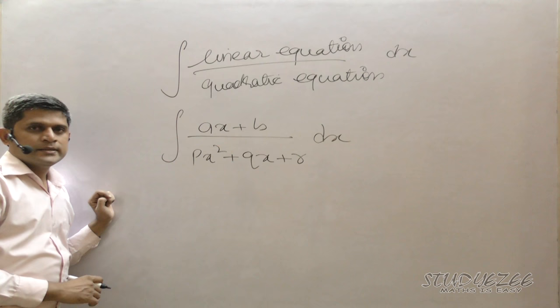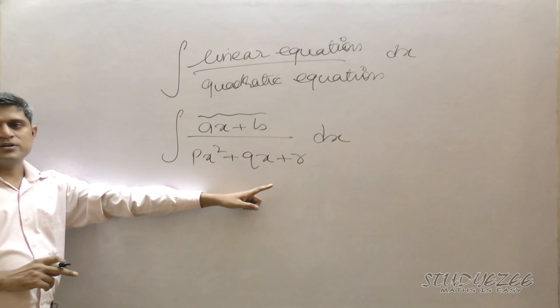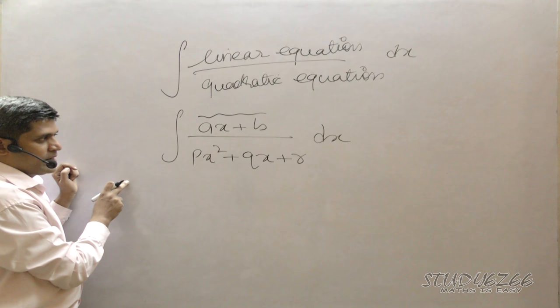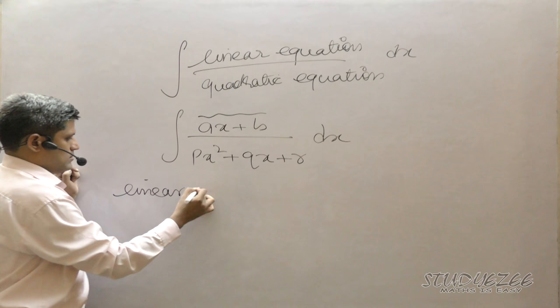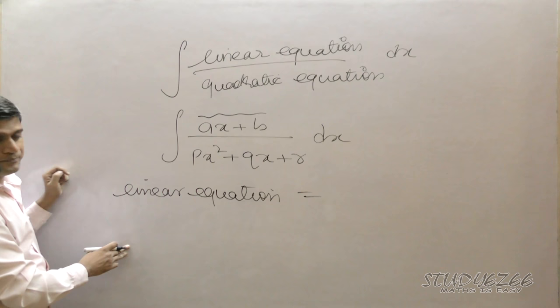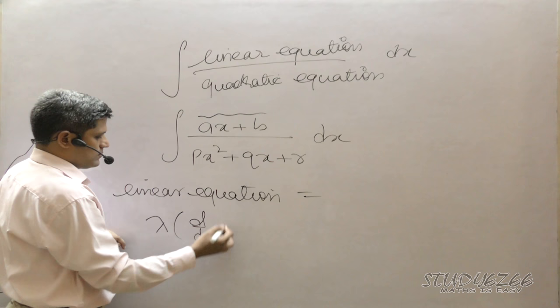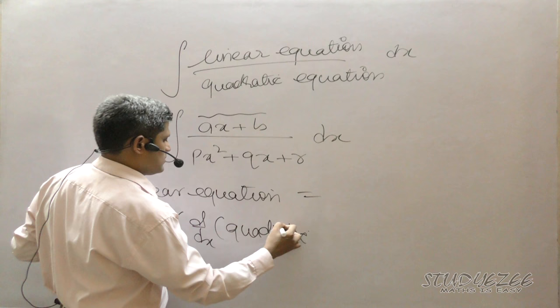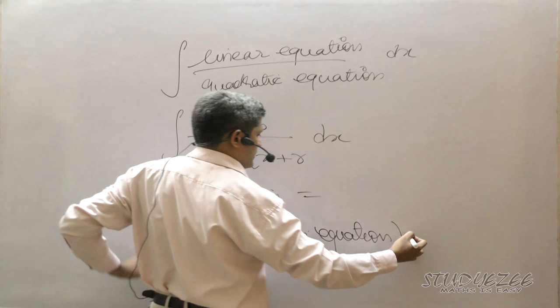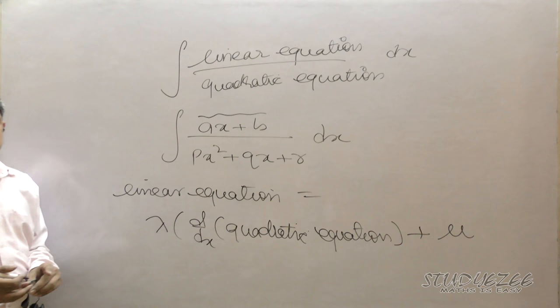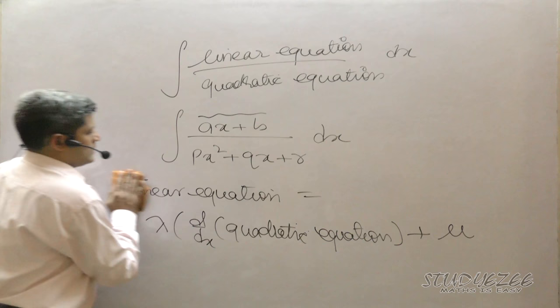When we get a question of this type, there is a linear equation on top and a quadratic equation in the denominator. The first step we have to do is write the linear equation as equal to some value lambda times the derivative of the quadratic equation, plus some constant mu.